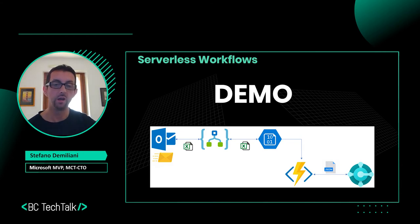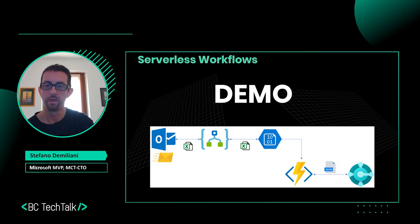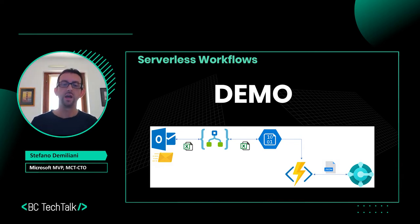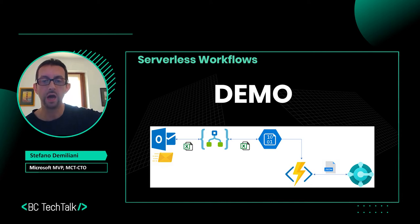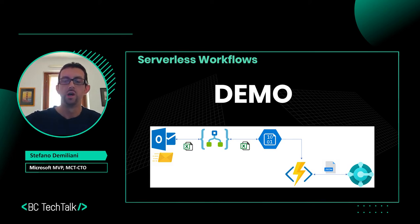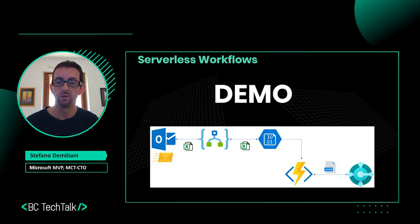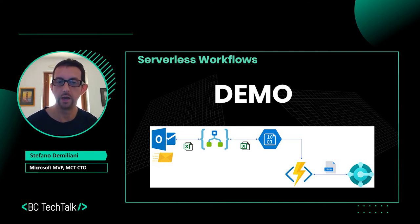If the email contains an Excel file, the workflow extracts it from the attachment, saves it to Blob Storage on Azure, then from Blob Storage extracts the file, parses it, and for each line creates a customer with the details from the file in Business Central. For this workflow we use a Logic App that connects to Outlook, extracts the Excel file, saves it to Azure Blob Storage, and then an Azure Function triggered by the Blob Storage takes the file, parses it with an Excel DLL, and saves the customer data to Business Central using Business Central APIs.